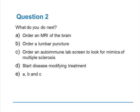The next question is: now that you have the diagnosis of clinically isolated syndrome, what do you do next? A, order an MRI of the brain; B, order a lumbar puncture; C, order an autoimmune lab screen to look for mimics of multiple sclerosis; D, start a disease-modifying therapy; or E, A, B, and C. The answer is E — A, B, and C — and we'll talk about why that's important.